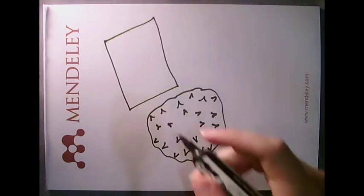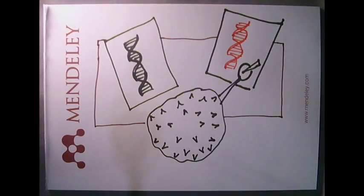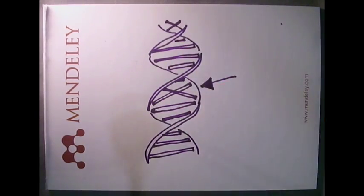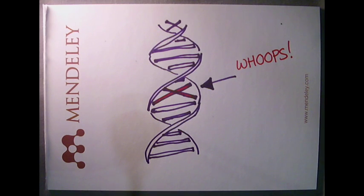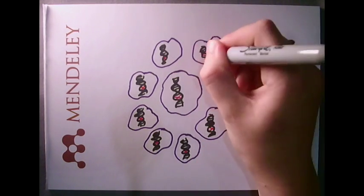Every time a bacterial cell divides, it must first make a copy of its DNA to give to the new cell. Sometimes there are mistakes in the copying process, and the new cell's DNA ends up being slightly different than the old cell's DNA. The new cell will keep passing on this mistake — called a mutation — every time it divides.